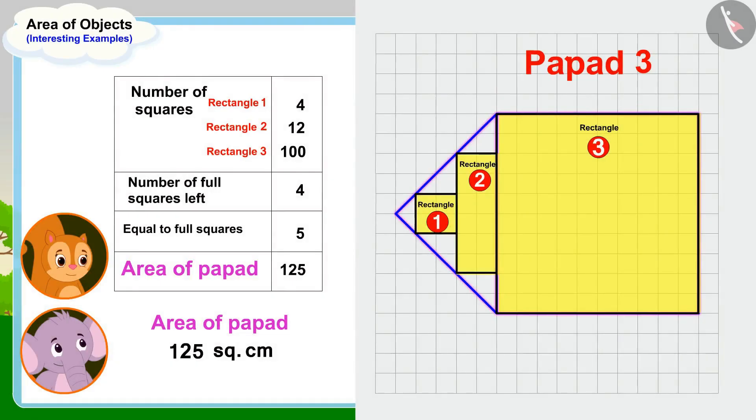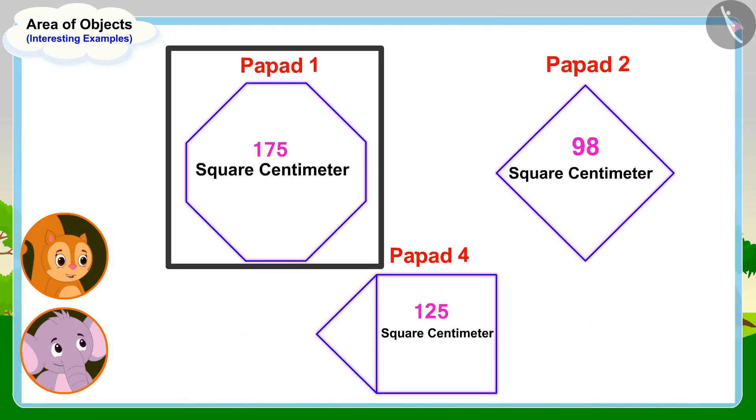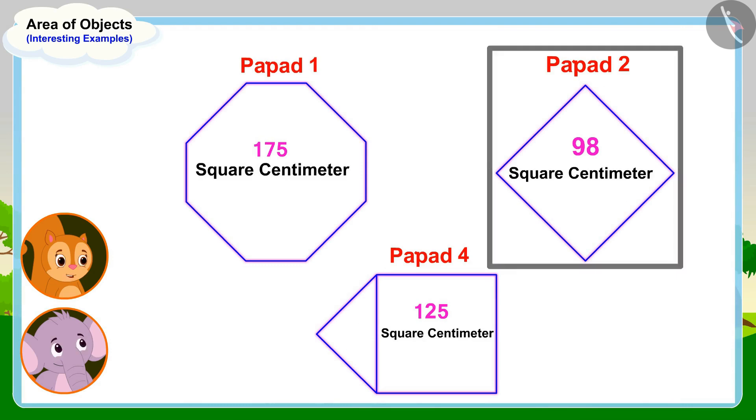Chanda and Appu also found the area of the third popper. Look Appu, first popper has the largest area, it means this popper is the largest. And second popper has the smallest area, it means this popper is the smallest, Chanda excitedly told Appu.